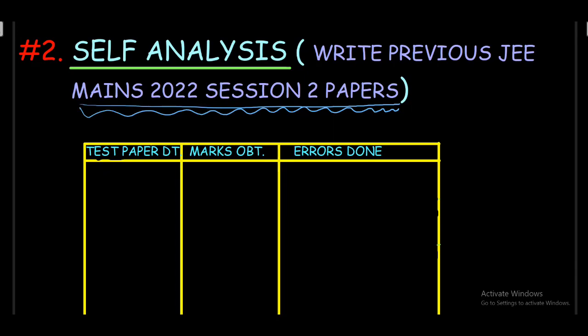What you can do is along with writing the paper, you make a table like this. Why you have to make a table like this? Because just writing paper is not enough. Analyzing the errors that we are doing in the test paper is also very important. Make a table like this. In the first column you will write down the test paper date on which you are writing the paper. For example, 25th December you are writing the paper. How many marks you obtained in that and the errors that you are doing. This will make a record of the errors and this will also help you in identifying the direction in which you have to work.